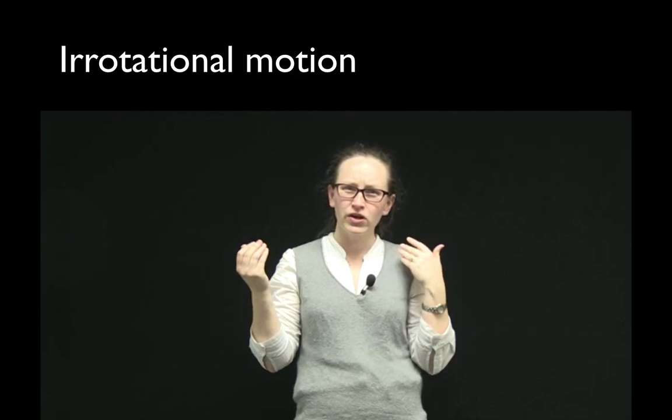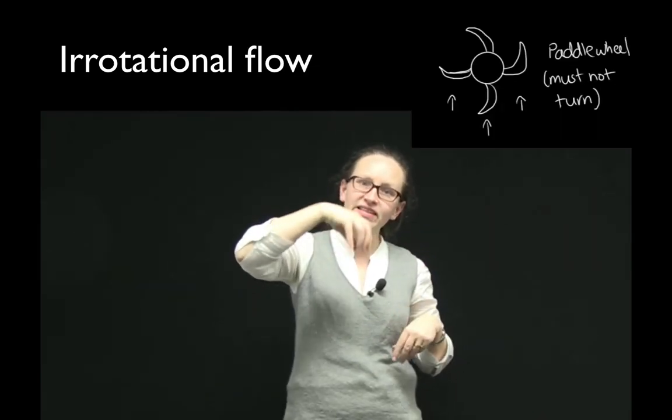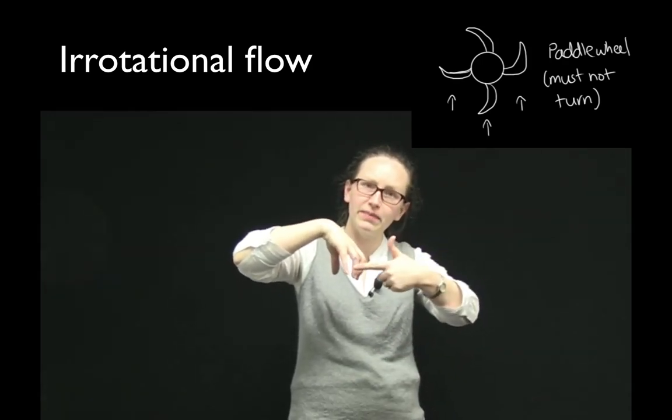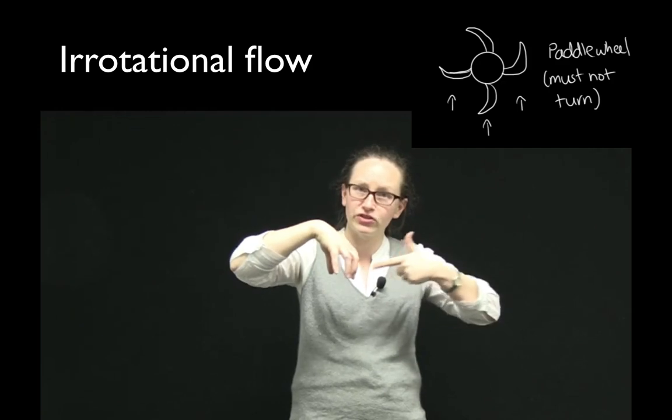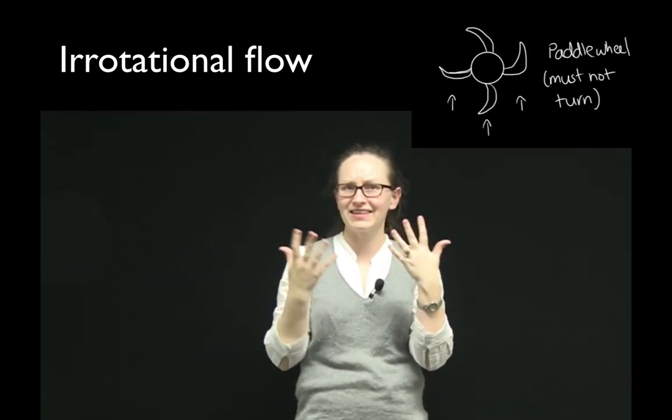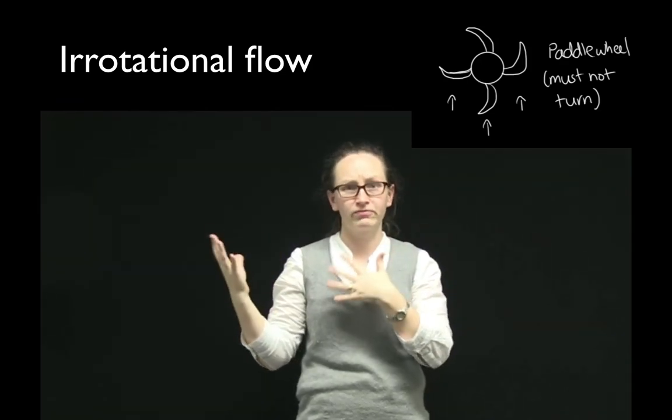The second thing we need to have ideal fluid flow is irrotational flow. So this means that if we put a paddle wheel at any point in that flow, it doesn't spin. So the force on the right of the paddle wheel is the same as the force on the left of the paddle wheel.